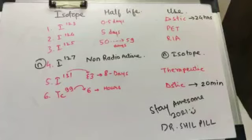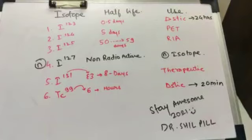Regarding uses: iodine-123 is used for diagnostic purposes, iodine-124 is used for PET scans, iodine-125 is used for radioimmunoassay, while iodine-127 is the normal non-radioactive isotope and is not used in any diagnostic test. Iodine-131 has a very long half-life and hence its use is therapeutic. Technetium-99 is also used for diagnostic purposes.